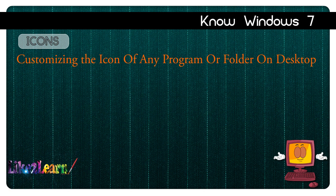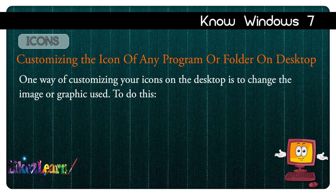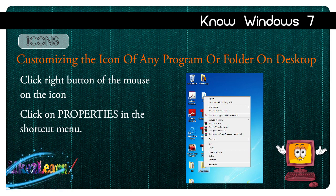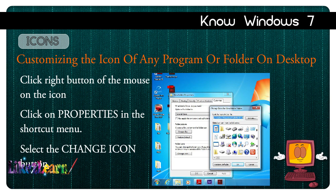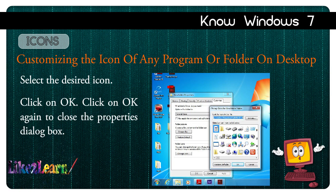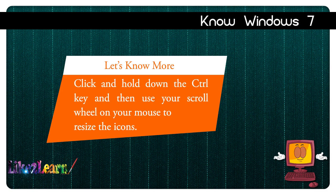Customizing the icon of any program or folder on the desktop: one way of customizing your icons is to change the image or graphic used. To do this, right-click on the icon, click Properties in the shortcut menu, select the Change Icon button, select the desired icon, click OK, and click OK again to close the property dialog box.